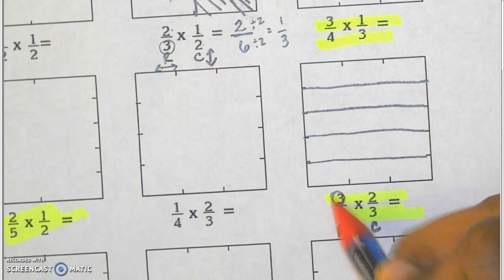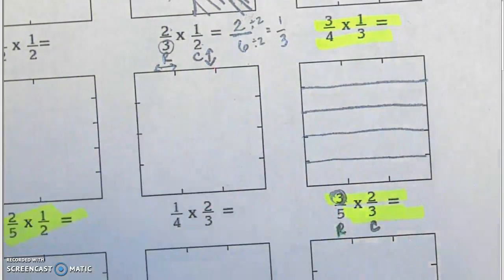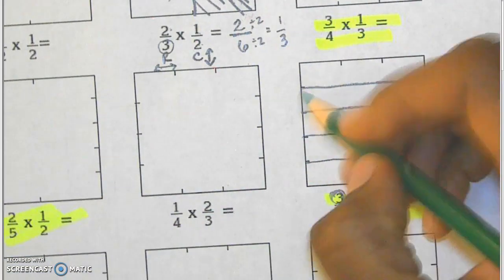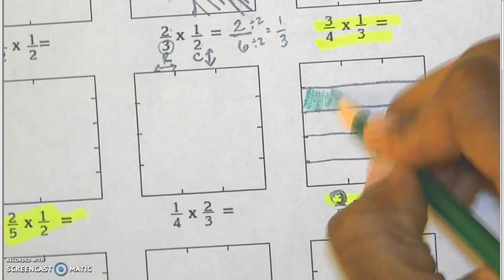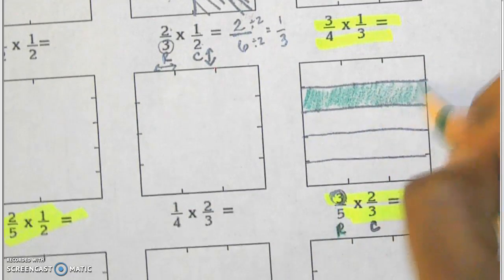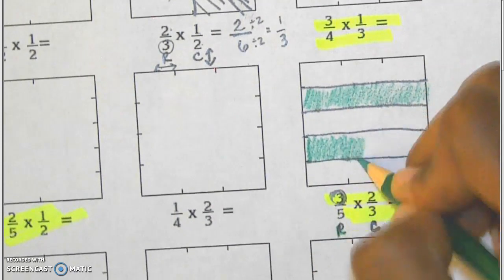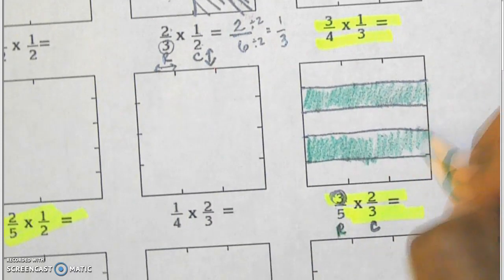And my numerator here tells me I need to shade in three of those five. And I just pick any random three. They can be next to each other. It's whatever you like.